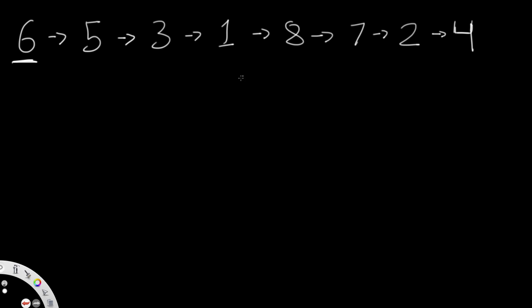What we're going to do is iterate through each of our numbers, and as we're iterating, we're going to have another linked list — our sorted linked list. In the very beginning, we add the first value, which is six. So this sorted linked list starts with just the number six. Since there's only one number, we consider it to be sorted.